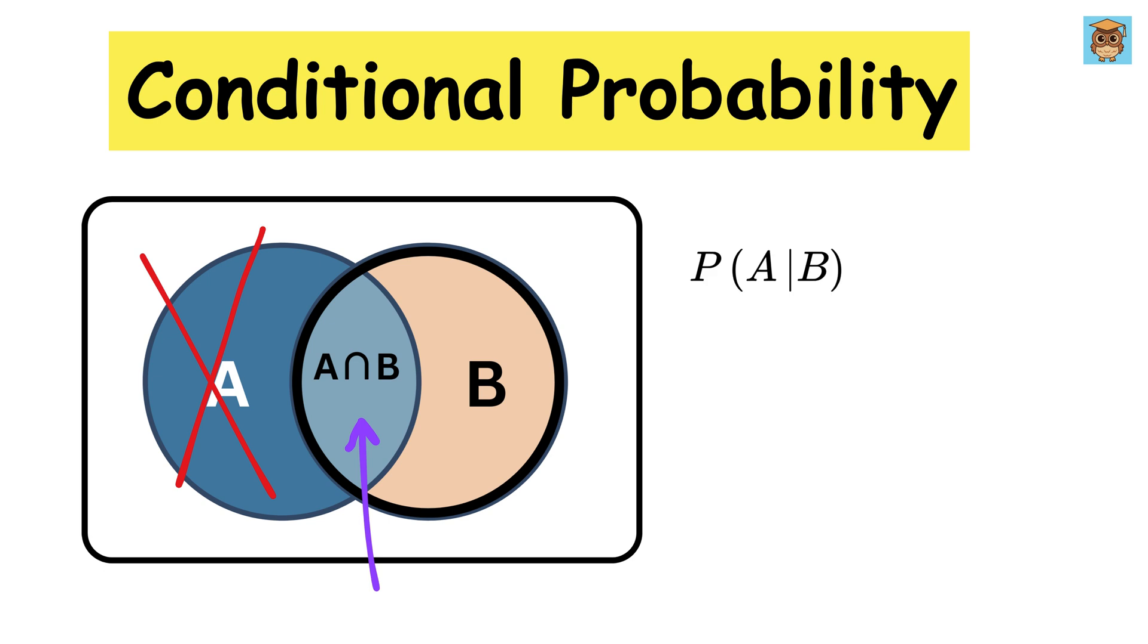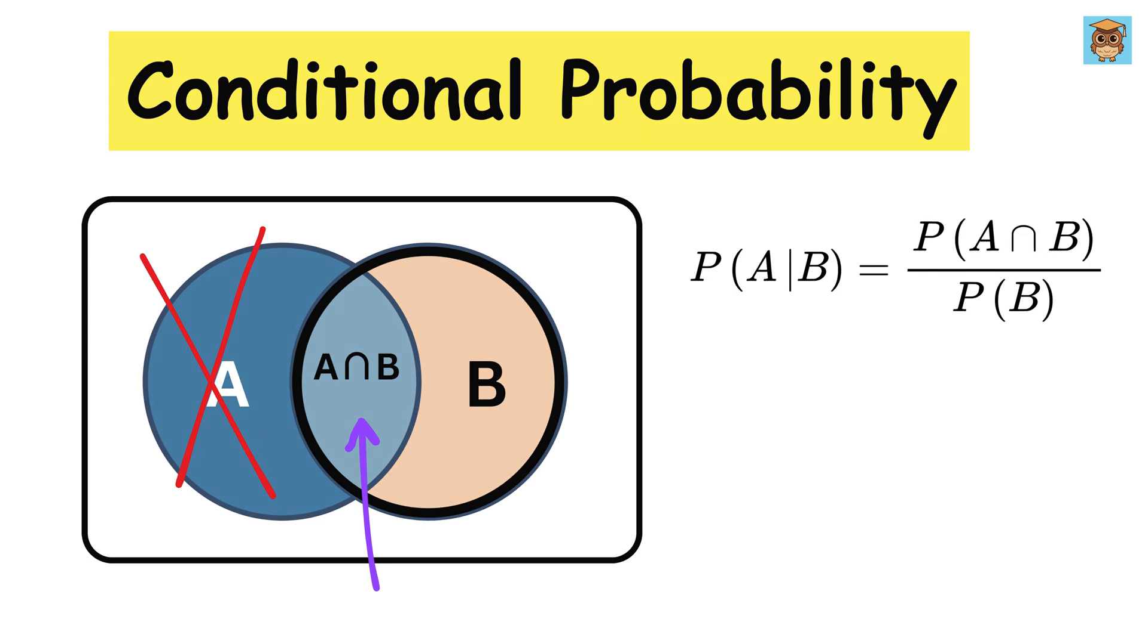Therefore, the formula will now be simple. The conditional probability of A given B, which we represent like this, is equal to the probability of both A and B happening together divided by the probability of just B happening. And that's it.